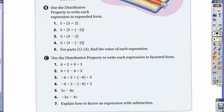You need to do the same thing for B3. So 5 times 3 and 5 times negative 2, which equals 5 times 3 plus 5 times negative 2.